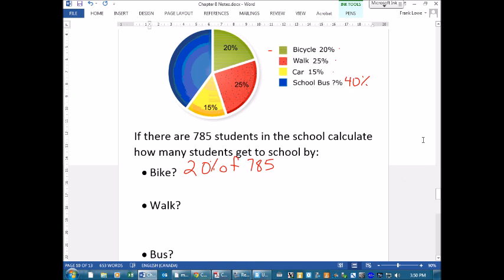So 20% of 785. First you convert that 20% to a decimal, so 0.20, don't really need the zero there, times 785. And here's where, you know, I'm nice to my students and I let them use a calculator sometimes, not always. And you actually don't need to use a calculator with these types of questions, but that's a topic for another time. So 0.2, two-tenths, times 785, and that gives us 157 students that ride their bike.